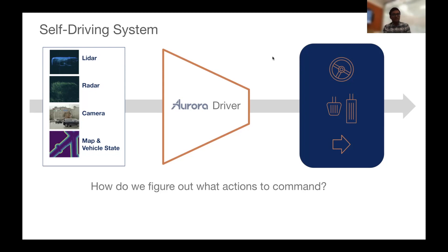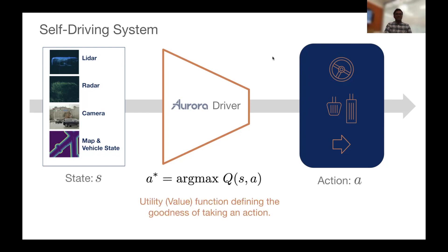So the core question of the Aurora driver is, how do I do this compression to figure out what actions to command at every cycle? From the inputs I see on the road, how do I convert this into actions I should take? And we can actually develop a mathematical framework to think about this holistically. On one side we have the state representation, we're trying to understand what is the state of the world, and on the right-hand side we're trying to produce an action in response.